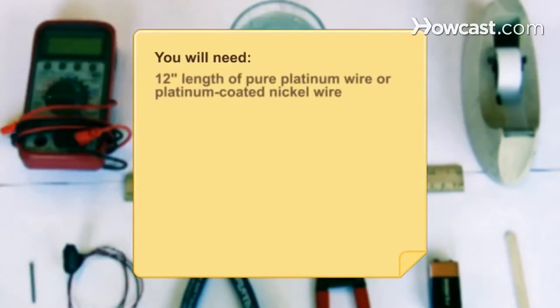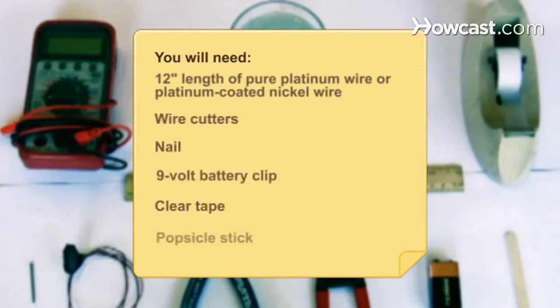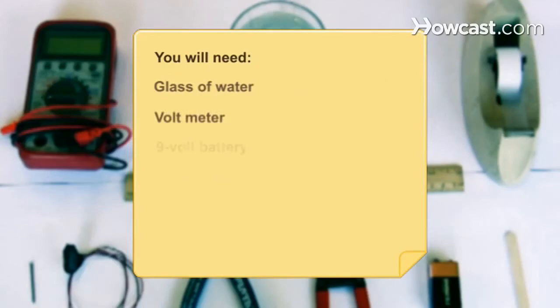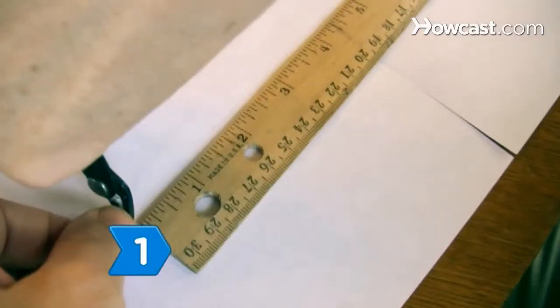You will need a 12-inch length of pure platinum wire or platinum-coated nickel wire, wire cutters, a nail, a 9-volt battery clip, clear tape, a popsicle stick, a glass of water, a voltmeter, and a 9-volt battery. Step 1.